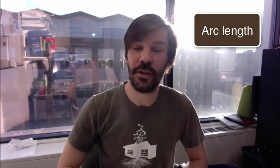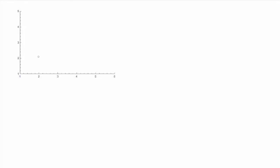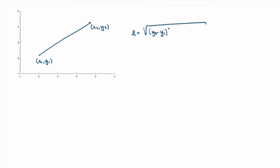What we're going to study in this video is how to calculate the length of a curve using integration. Let's start with something pretty simple. If I pick two points in the plane, (x1, y1) and (x2, y2), and draw a straight line between them, the length is given by the square root of the difference in y-coordinates squared plus the difference in x-coordinates squared. This is just an application of the Pythagorean theorem.